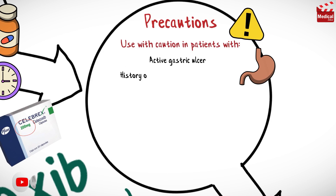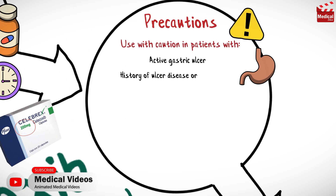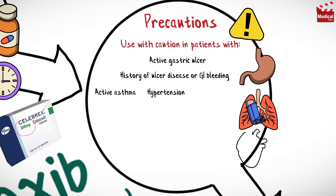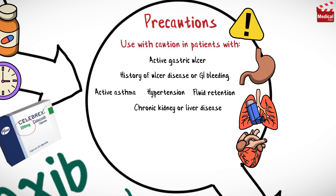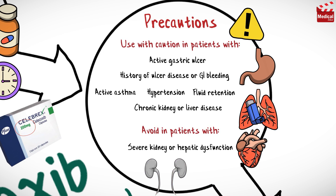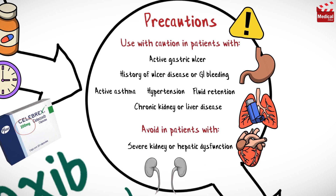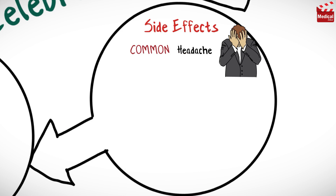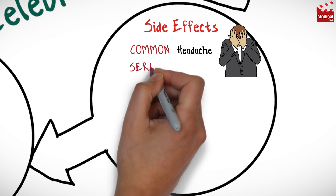Use with caution in patients with the following conditions: active gastric ulcer, history of ulcer disease or gastrointestinal bleeding, active asthma, hypertension, fluid retention, and chronic kidney or liver disease. Avoid use in patients with severe kidney or hepatic dysfunction.